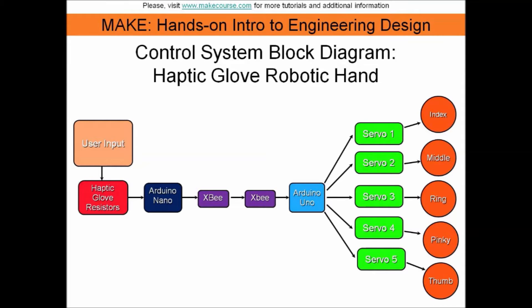The XB radio sends the data to a second XB in the base of the hand assembly. The second XB transmits to an Arduino Uno, which gathers the data and moves the servo to the designated finger to the prescribed angle.